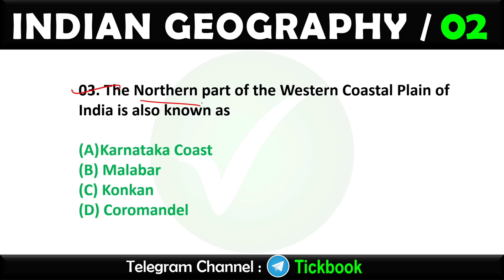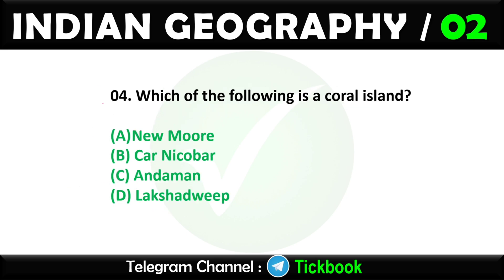Question three: The northern part of the Western Coastal Plain of India is also known as. Option number C is the right answer: Konkan. Question four: Which of the following is a coral island? Option number D is the right answer: Lakshadweep.